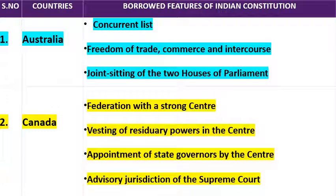Next है Appointment of State Governors by the Centre — जो state governors हैं, उनका appointment Centre government के through किया जाएगा, यह भी Canada के constitution से borrow किया गया है। Next है Supreme Court की advisory power — Article 143 में Supreme Court की advisory jurisdiction दी गई है, वो भी Canada के constitution से borrow की गई है।